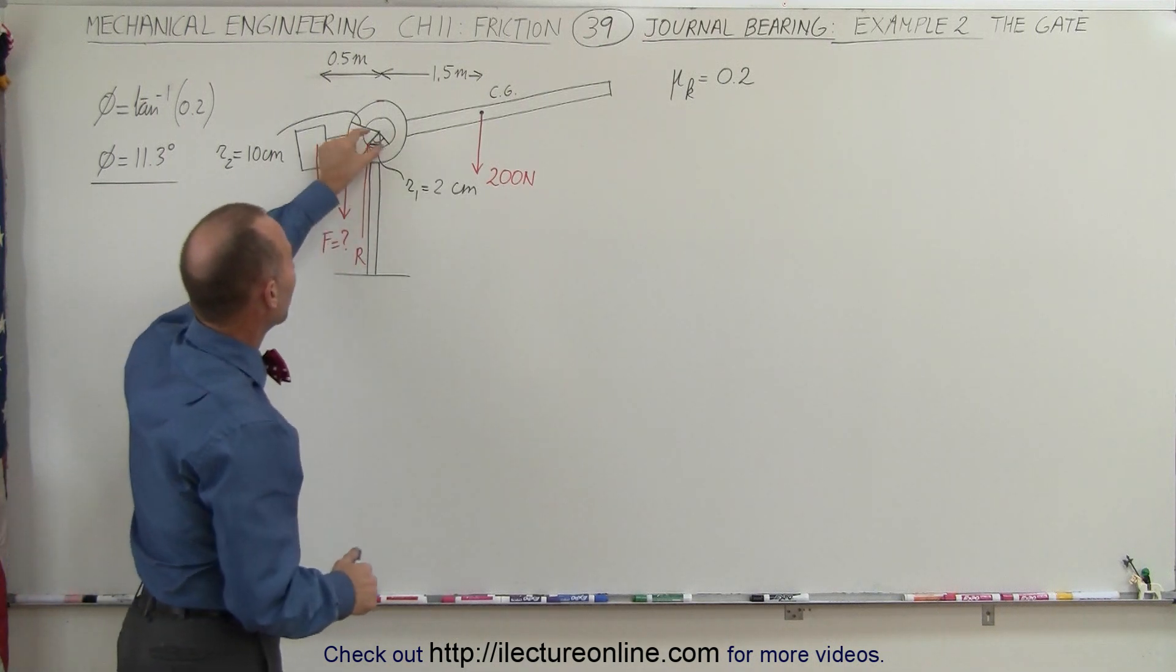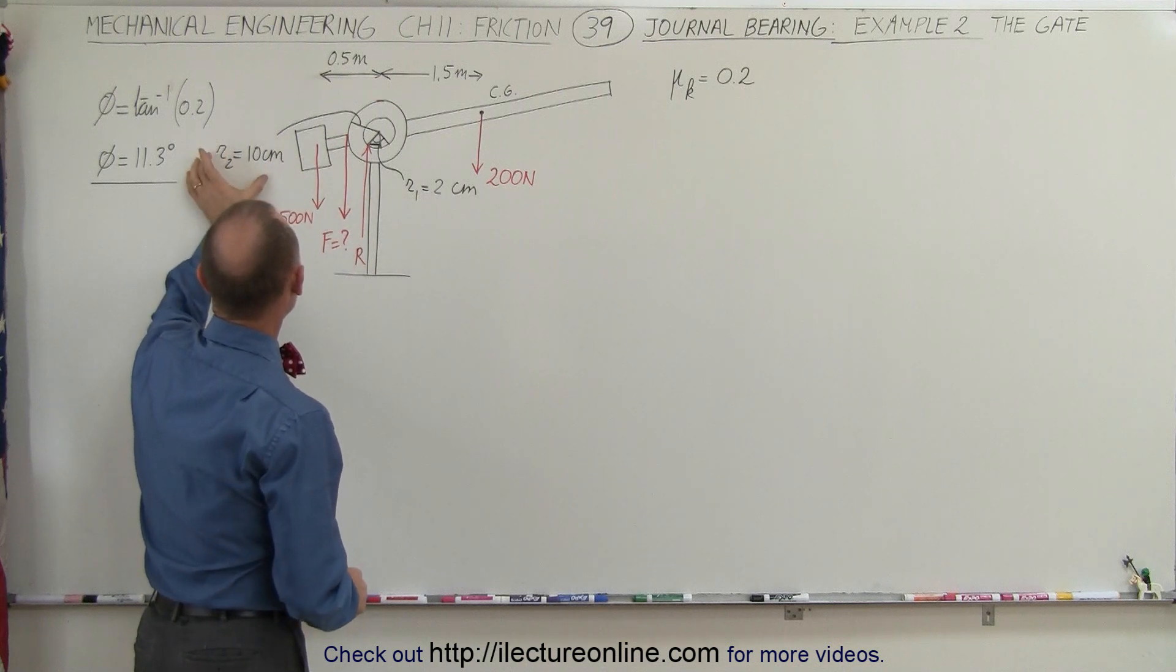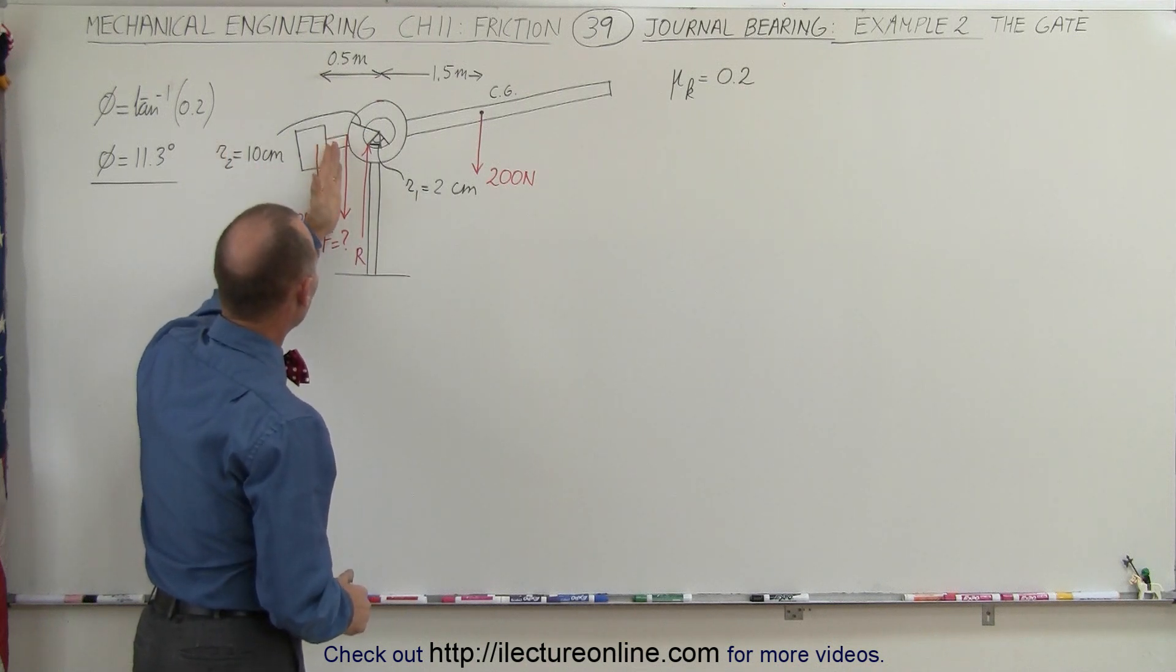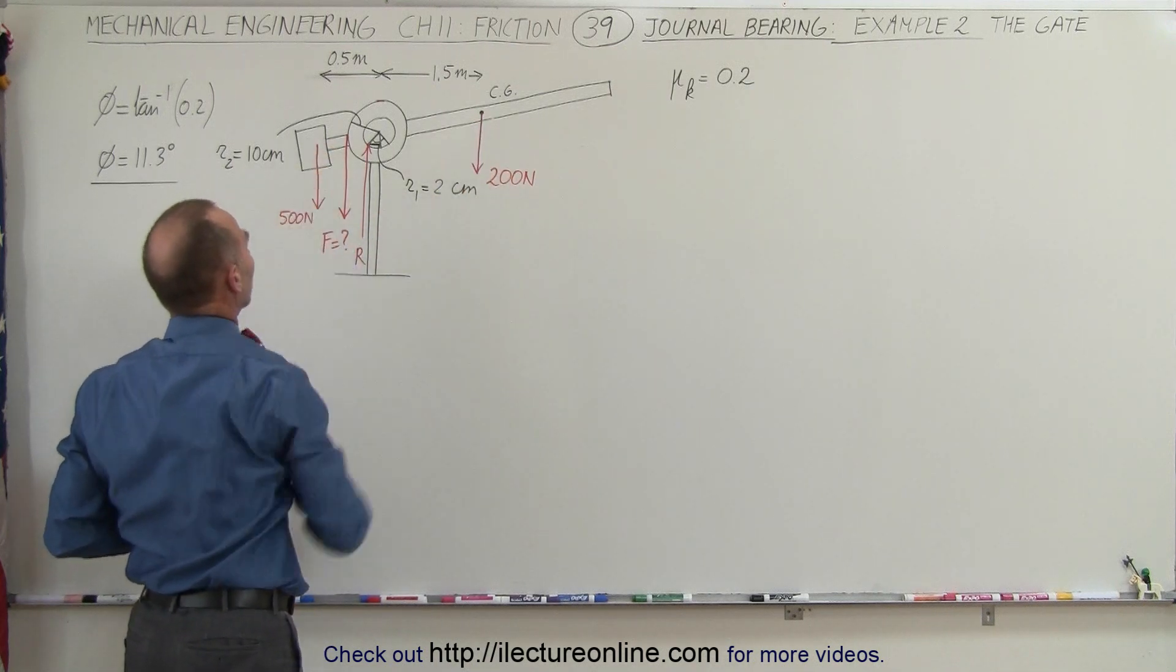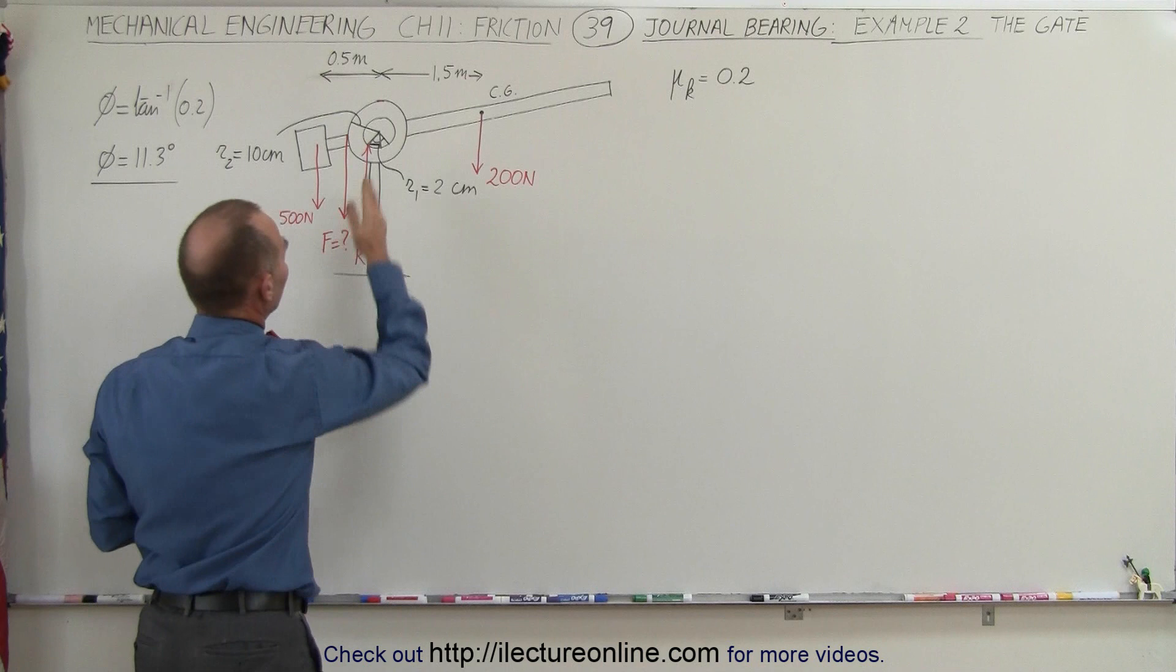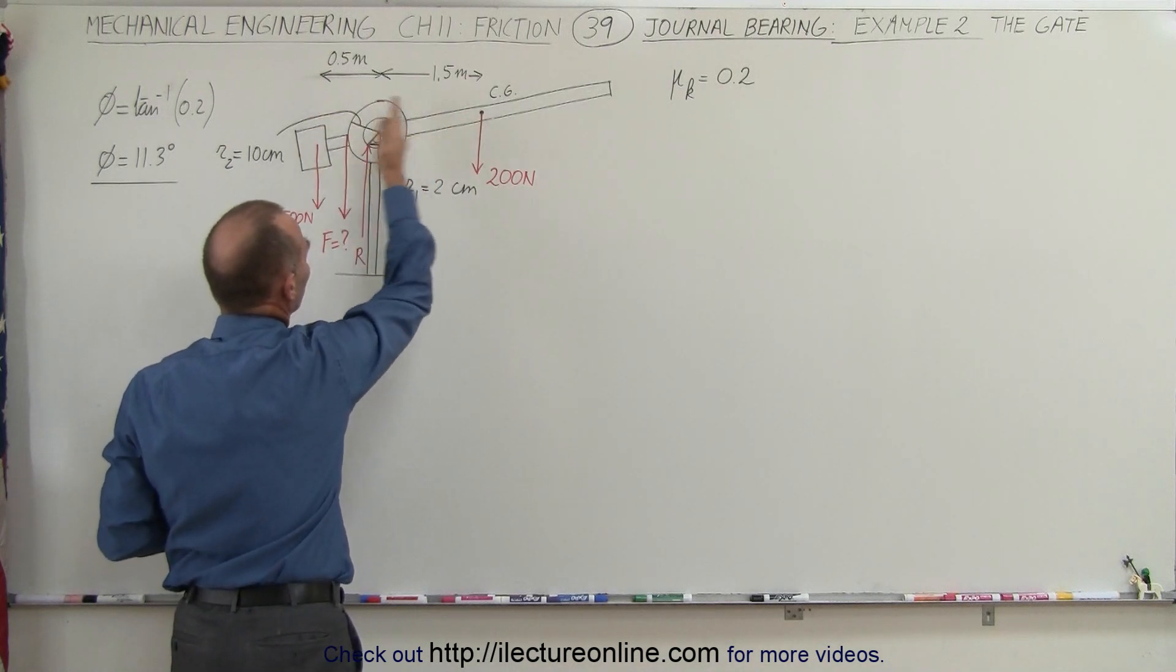Notice that the radius of the bearing is 2 centimeters, and the radius about which the force acts is going to be 10 centimeters. We have the weight of the gate and the weight of the counterweight right here, and of course the distance where the center of gravity is of those two weights.